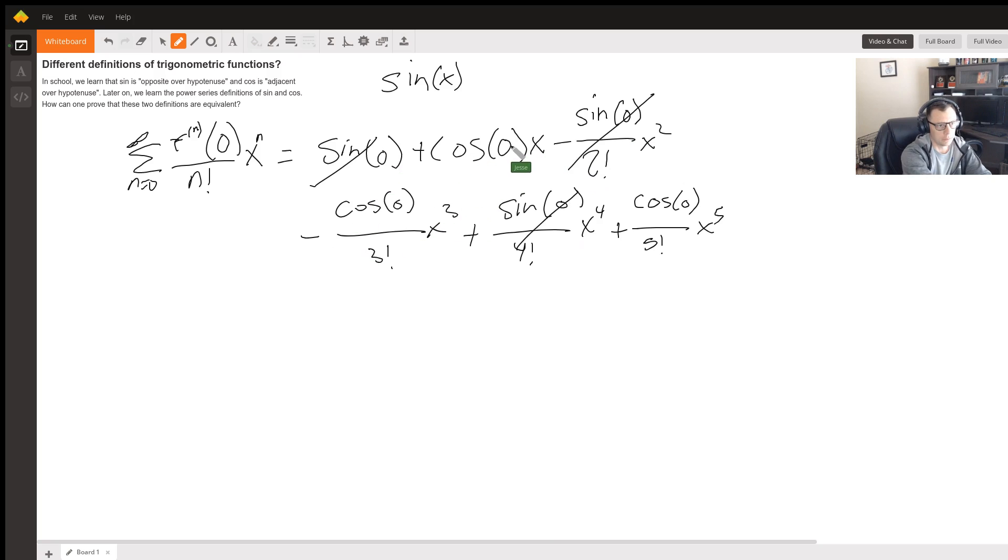So all you're going to be left with, cosine of zero is one times x is just going to be x. And then one over three factorial. It's going to be minus, so one over three factorial times x to the third.